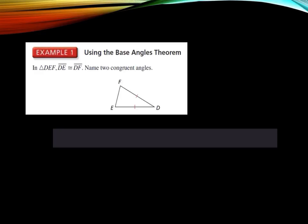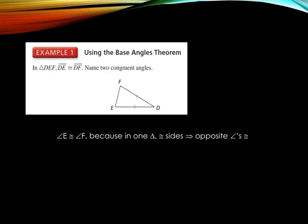Let's take a look at Example 1: use the Base Angle Theorem to name the two congruent angles. The Base Angle Theorem says if two sides of a triangle are congruent, then the angles opposite those congruent sides are also congruent. Here we have sides FD and DE congruent, so angle F — opposite side ED — is congruent to angle E — opposite side FD. The reason: in one triangle, congruent sides implies opposite angles congruent.